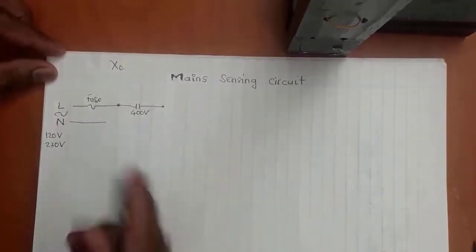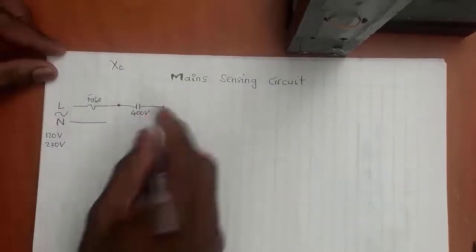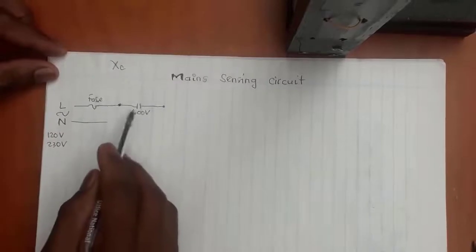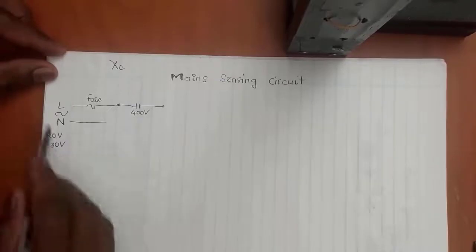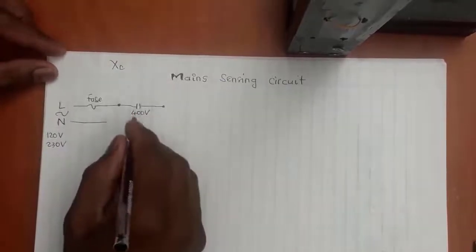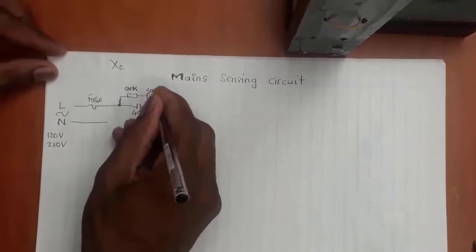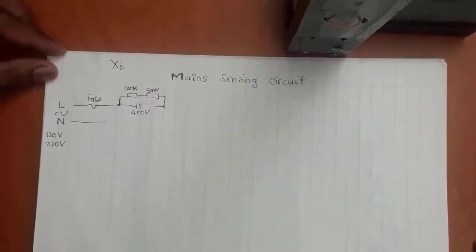Now remember, because this capacitor is connected to your live and neutral, it's going to be fully charged to either 120 or 230 volts. So if it's not discharged when you disconnect AC, there's still going to be 120 or 230 volts there. To avoid someone getting a shock, you connect two resistors here to enable it to discharge the capacitor. The value could be 500k each.